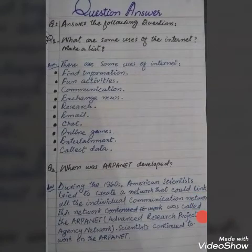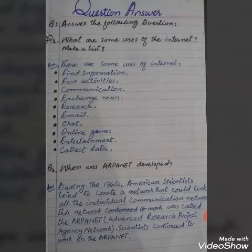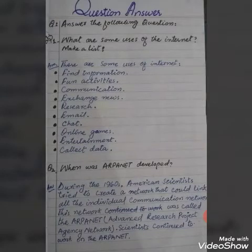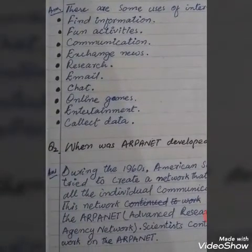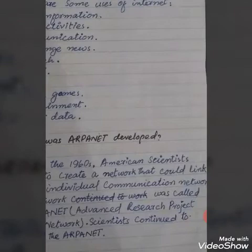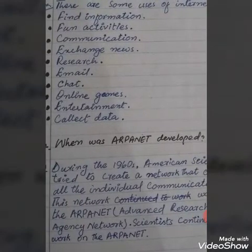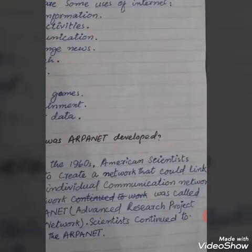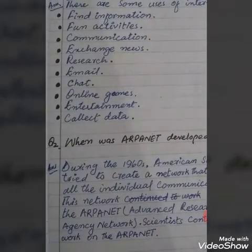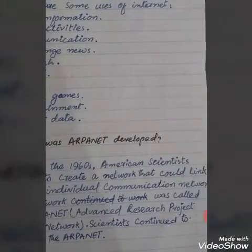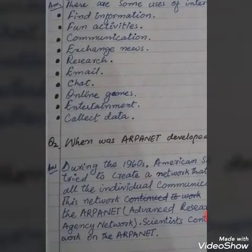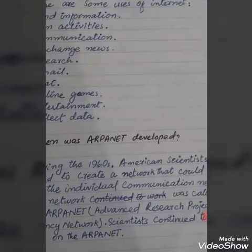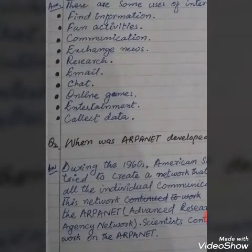Number 2: when was ARPANET developed? The answer is: during the 1960s, American scientists tried to create a network that would link all the individual communication networks. This network was called ARPANET, which means Advanced Research Project Agency Network. Scientists continued to work on the ARPANET.